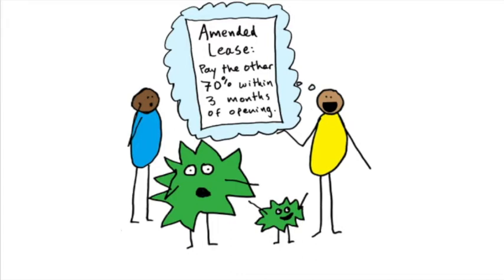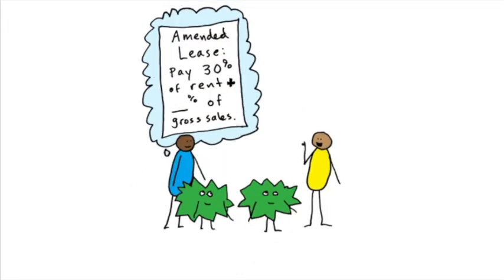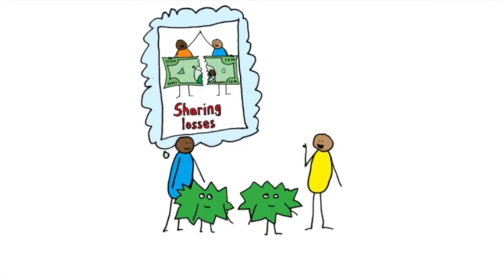But we don't know what business will be like when we reopen. We don't know if we'll ever recoup our losses. How about we pay a percentage of our gross sales income for the next couple years? If business is good, we'll be able to make up the rent. If business isn't good, we'll kind of share the losses.